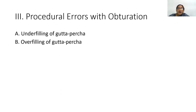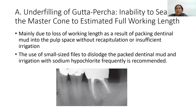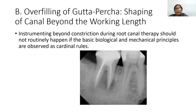Procedural errors with obturation include underfilling and overfilling of gutta-percha. Underfilling is the inability to seat the master cone to the estimated full working length, mainly due to loss of working length as a result of packing dentinal mud without recapitulation or insufficient irrigation. Use small-sized files to dislodge packed dentinal mud and irrigate frequently with sodium hypochlorite. Overfilling results from shaping the canal beyond working length or instrumenting beyond the apical constriction, which should not routinely happen if biological and mechanical principles are observed.